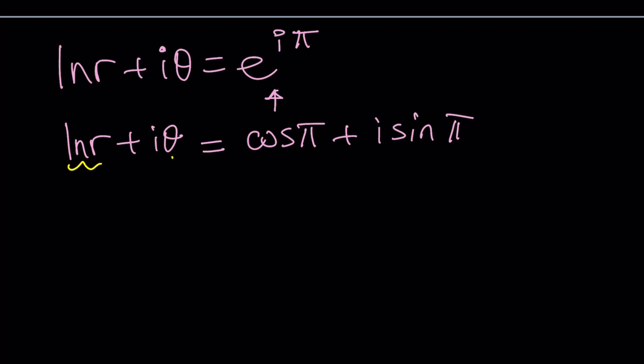By setting the imaginary parts and real parts equal to each other separately, we find that ln r is the same as cosine pi, which is by the way, negative one. Is that helpful? And then sine theta is equal to, sine pi is equal to theta. By the way, sine pi is zero. So theta is zero.